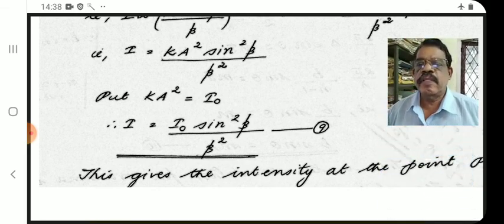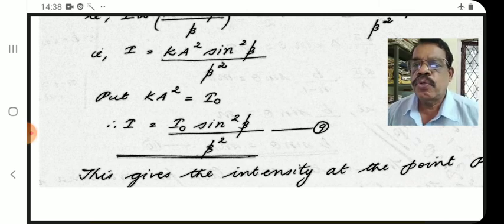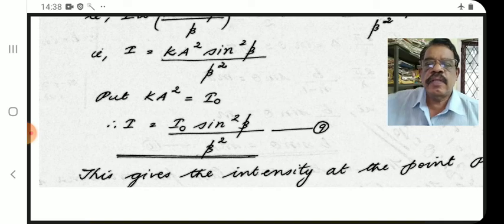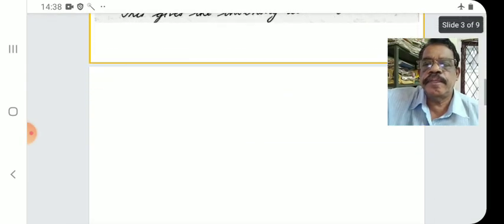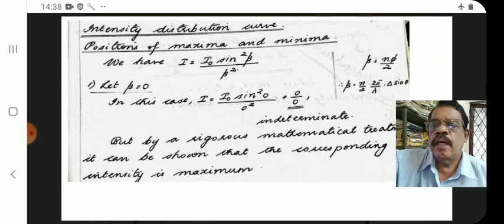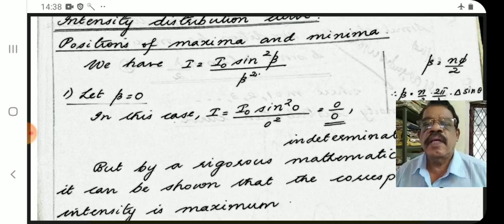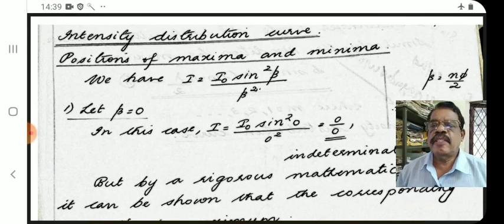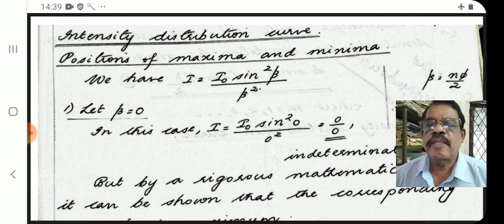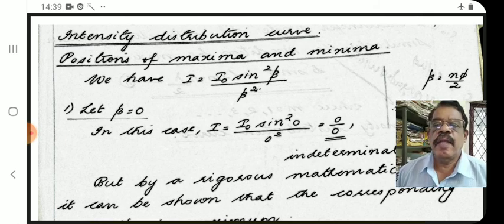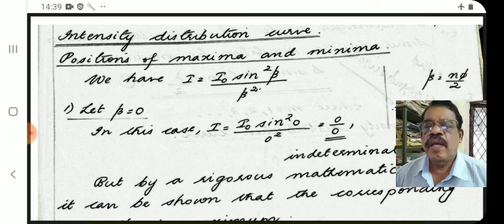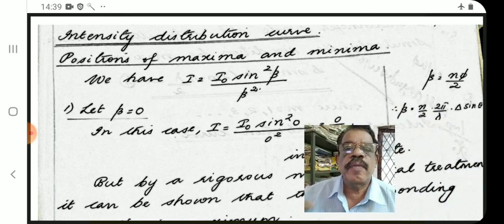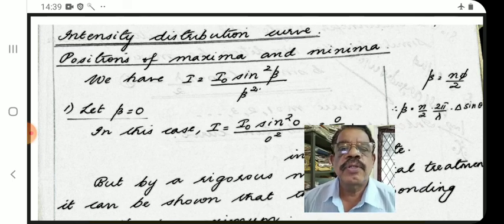The intensity of light on the screen due to diffraction at a single slit is given by I = I₀·sin²β/β², which gives the intensity at point P on the screen. To draw the intensity distribution curve, we need to find positions of maxima and minima. Here β = nφ/2, that is β = (n/2)·(2π/λ)·Δ·sinθ, where φ is the phase difference 2π/λ · Δ·sinθ.